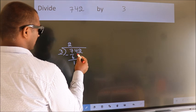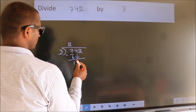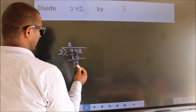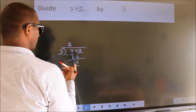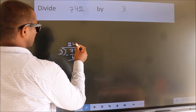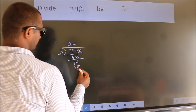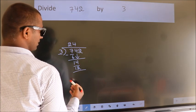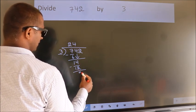After this, bring down the next number. So 4 comes down, giving us 14. A number close to 14 in the 3 times table is 3 times 4, which is 12. Now we subtract and get 2.